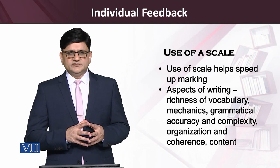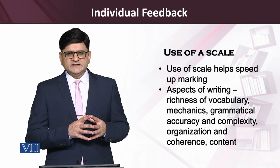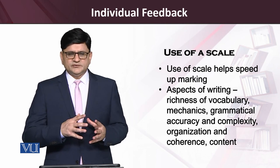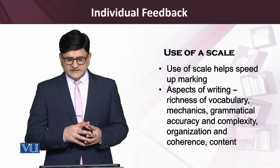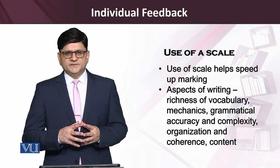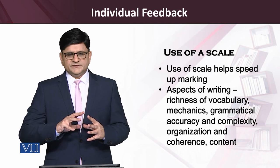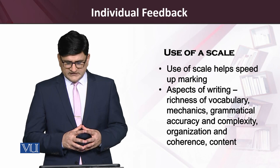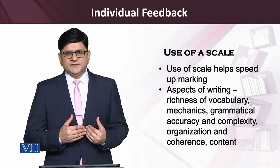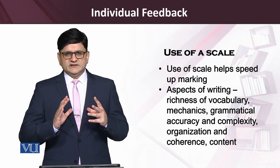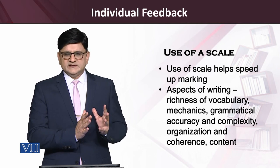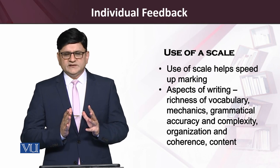Instead of spending too much time pointing out grammatical aspects of student work, the teacher might use the scale from 1 to 5 to indicate where the student work stands. Complexity means whether ideas progress from simple to complex to an advanced level. Organization means whether the work follows standard parameters — a proper introduction, middle paragraphs, and conclusion. Coherence refers to the overall development of ideas, and content refers to the quality of the argument. These areas can be put in a table, rated by the teacher, and accompanied by comments.